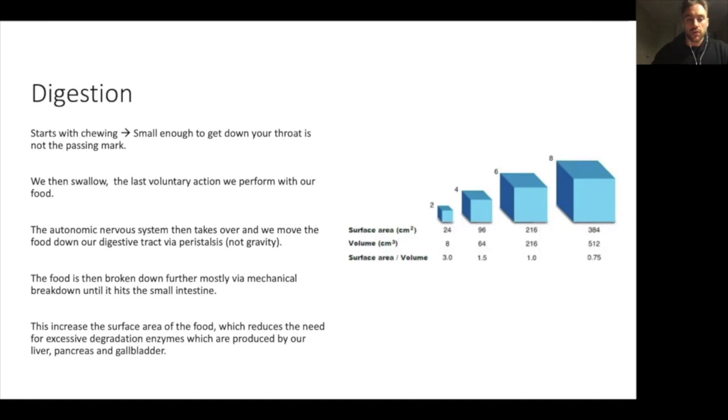Then when we swallow, that is basically the last voluntary action we perform with our food. At that point, the autonomic nervous system takes over and we move the food down our digestive tract via peristalsis. So this is the wave-like sort of squeezing of smooth muscle down your esophagus and into your organs. I've just got 'not gravity' there because I remember my nan used to tell me that if I'd eat some food and then lie upside down or something like that, it would come back out because of gravity. But the way peristalsis works is that even if you were to hang upside down, your body would still move food towards your stomach even if you were the wrong way up. It's like squeezing toothpaste up a tube, basically.